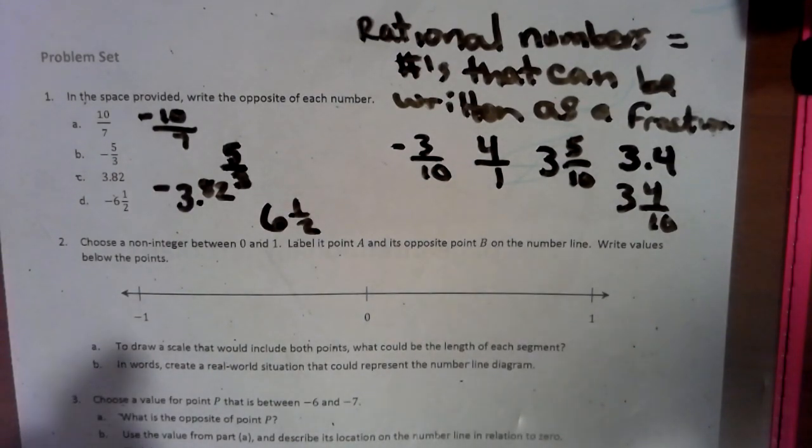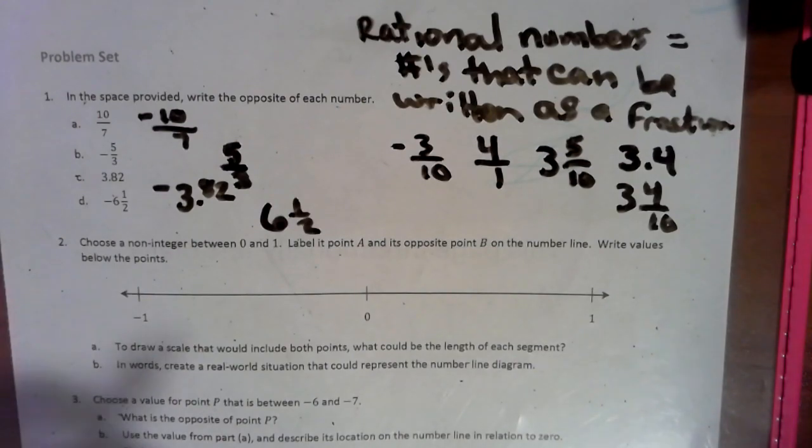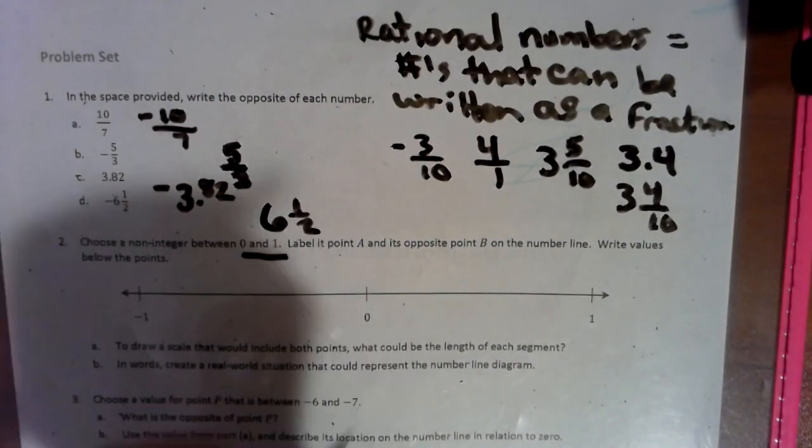Now the next thing is if we're looking at this number line on number two, it's just choose a non-integer. So a non-integer means it's not one of the whole numbers. It's not a negative one, a zero, or a one. It's something between something. So we have between zero and one. So let's say a fourth.